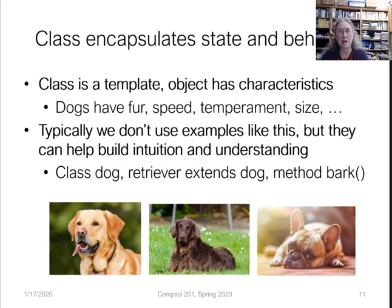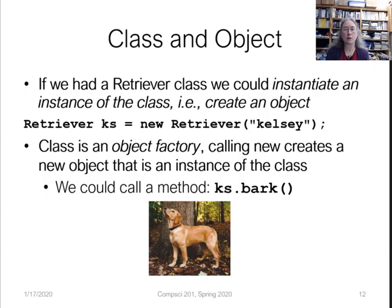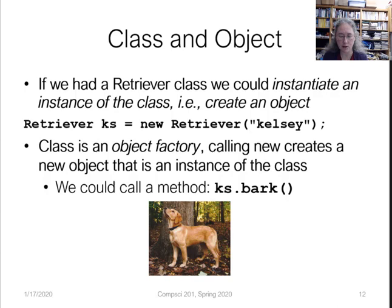Classes also have behavior. For the dog class, dogs can bark, they could walk, they can do all kinds of things. If we had a retriever class, we could instantiate an instance of the class, which means we're creating an object. In this line, I'm saying I'm going to create a retriever. KS is going to be the name of that object. Then we assign it by creating memory for it — we say 'new' and create a new retriever using the constructor, passing in the name of the dog, which is Kelsey. You can think of a class as an object factory because it creates lots of objects from that template class.